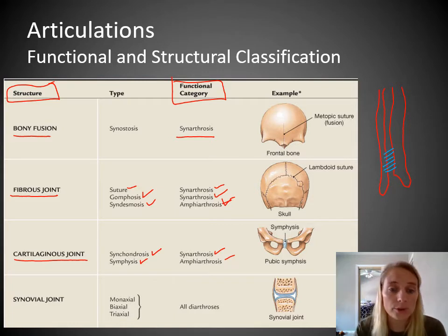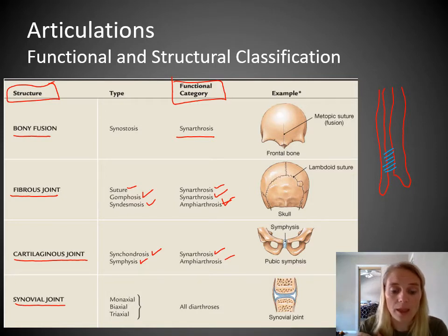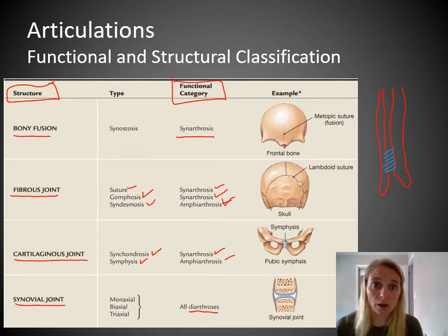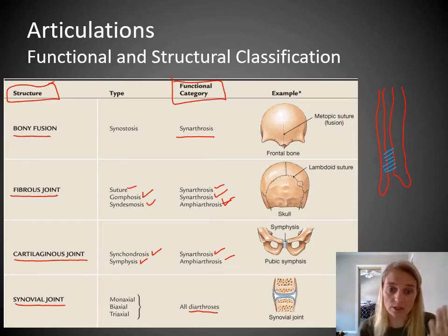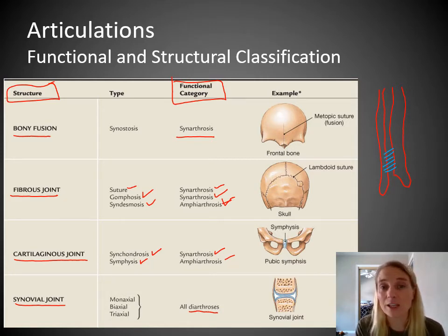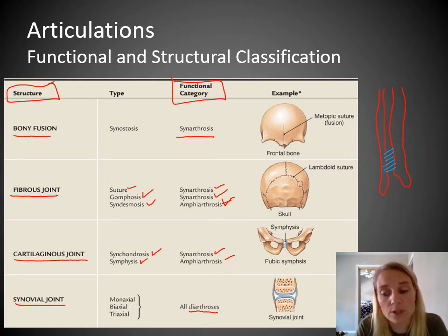The last category — both structural and functional — that we'll spend most of our remaining time on is called a synovial joint. Synovial is the name of that structural classification, and the functional category is diarthrosis, meaning freely movable. By the combination of these two categories, we have four structural classifications and three functional classifications: bony fusion, fibrous, cartilaginous, and synovial in reference to how they look; synarthrosis, amphiarthrosis, and diarthrosis based on what they can do — no movement, a little movement, freely movable — with examples like sutures, gomphosis, syndesmosis, synchondrosis, and symphysis. Then we'll spend more time on synovial joints.